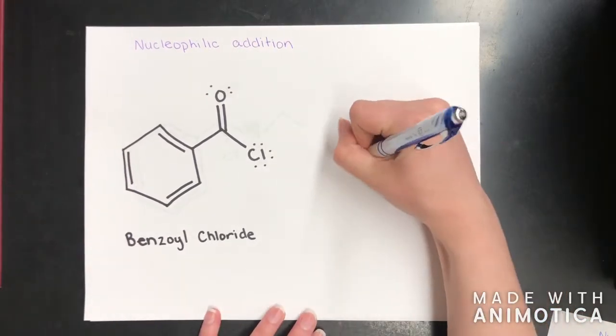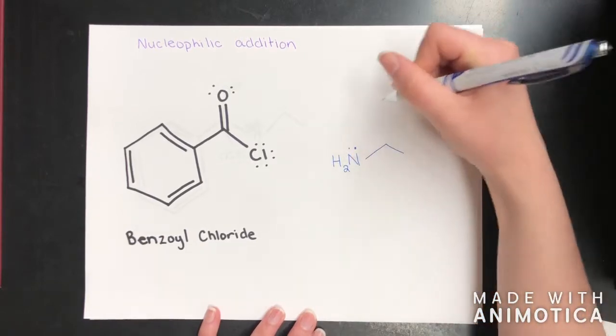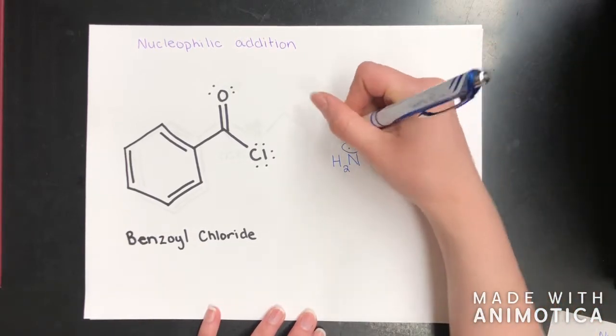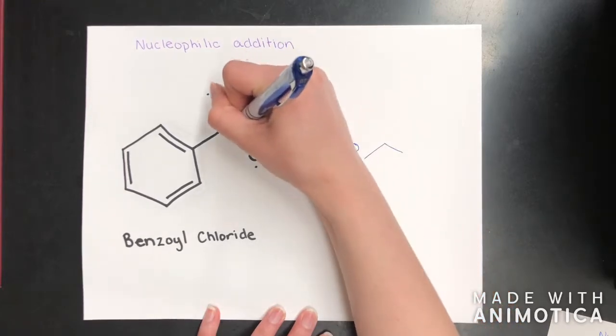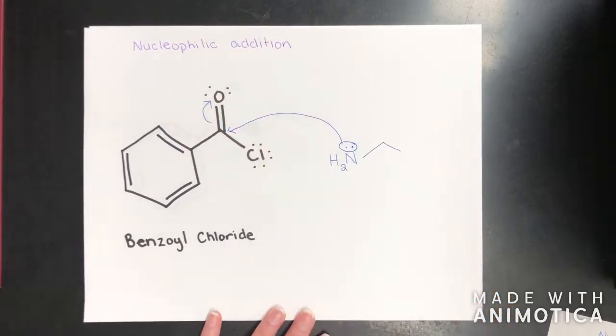In this step, the nucleophile we use is going to be ethanamine. The lone pair on the nitrogen is going to attack the carbon with a double bond oxygen, breaking the double bond and leaving another lone pair on the oxygen, which will make it negative.